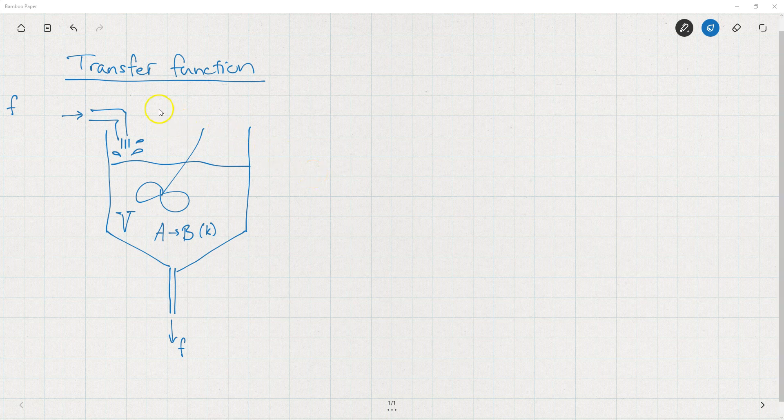We would like to compute the transfer function for a physical system. In this case, it's a reactor. We have a feed coming in. There's a reaction going on. The reactant A is turned into the product B, and then we have a drain here.